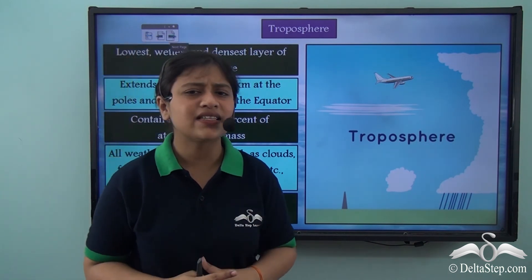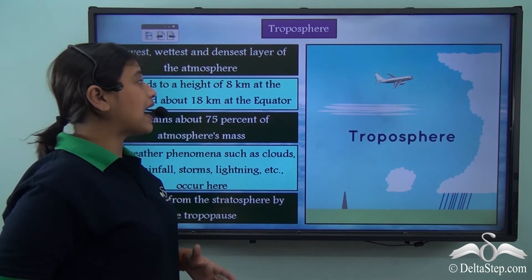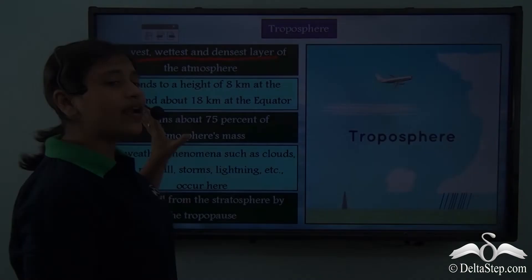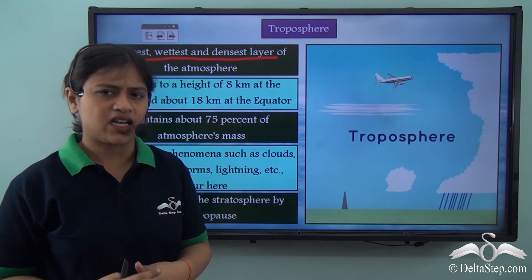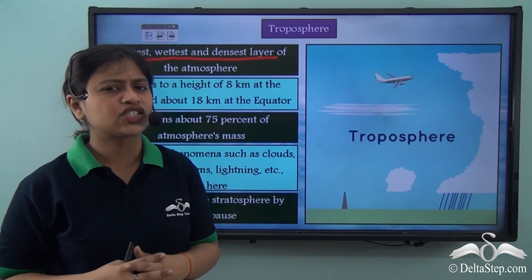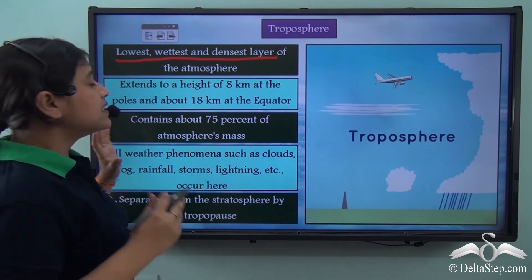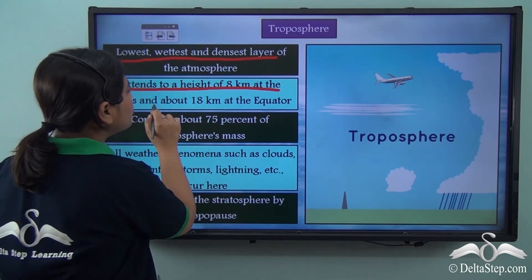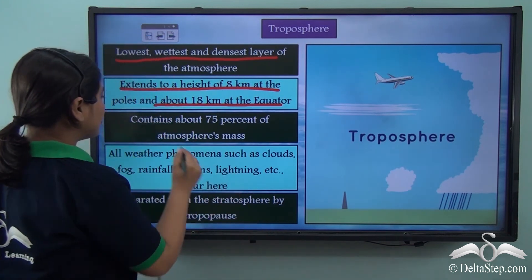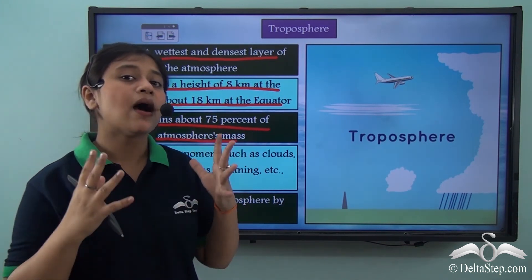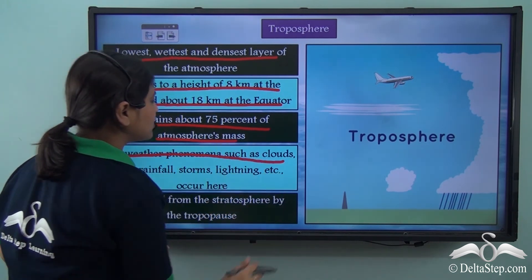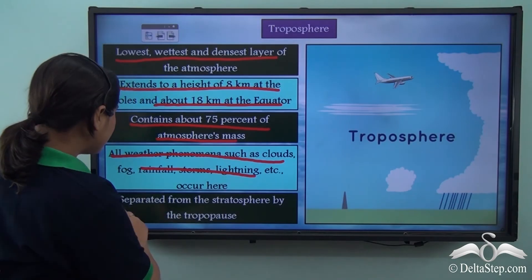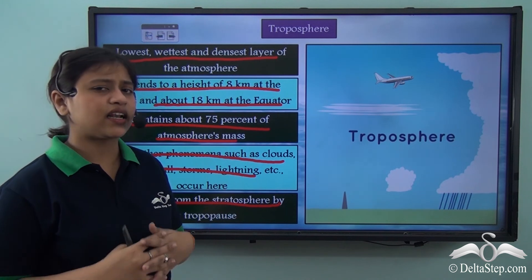To summarise the troposphere: it is the lowest, wettest and densest layer of the atmosphere. It extends to a height of 8 km at the poles and up to 18 km at the equator. It contains about 75% of the atmosphere's mass. All weather phenomena such as clouds, fog, rainfall, storms and lightning occur in this layer. It is separated from the stratosphere by the tropopause.